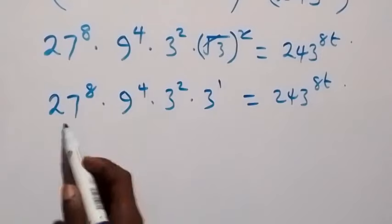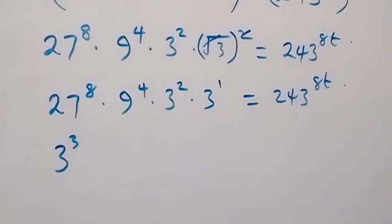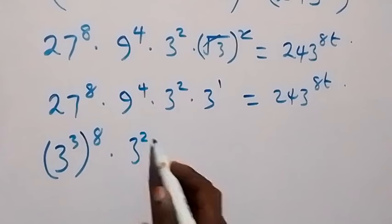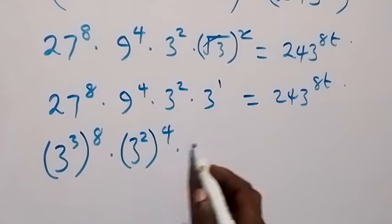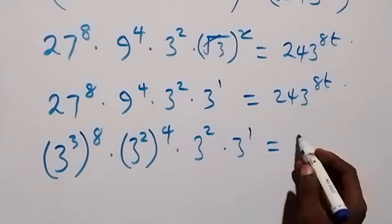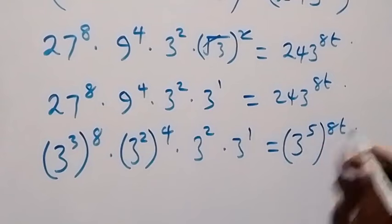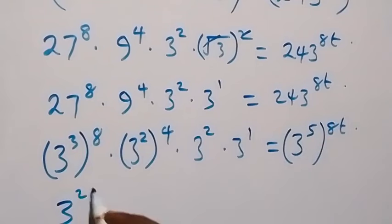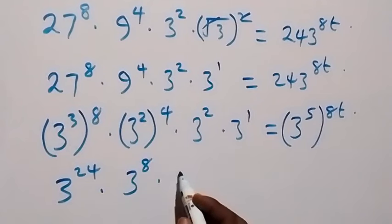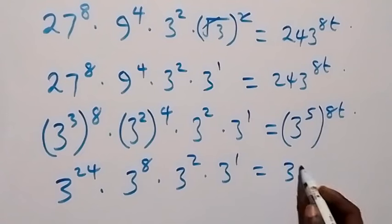Let's change everything to base 3. We write 27 as 3 raised to power 3 — that's 3 multiplied 3 times — raised to power 8. Then 9 as 3 squared raised to power 4, then times 3 squared raised to power 1. For 243, we write it as 3 raised to power 5 — that's 3 multiplied 5 times — raised to power 8t. So we have 3 raised to power 24, then times 3 raised to power 8, then times 3 squared, times 3 raised to power 1, equals 3 raised to power 40t.